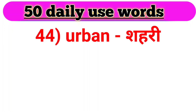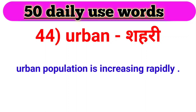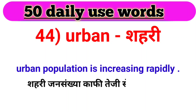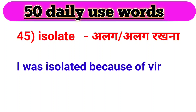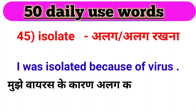Next word, we have urban. Urban ka matlab hota hai shahari. For example: Urban population is increasing rapidly. Shahari jansankhya kaafi tezi se badh rahi hai. Agla word hai — isolate. Isolate ka matlab hota hai alag ya alag rakhna. For example: I was isolated because of the virus. Mujhe virus ke kaaran alag kar diya gaya.